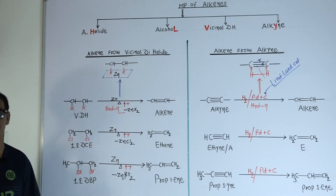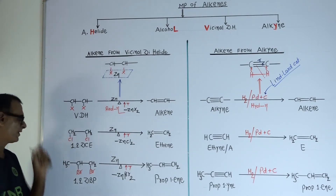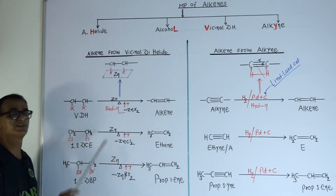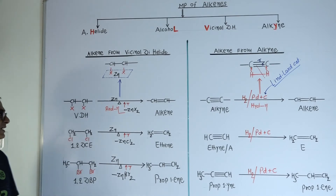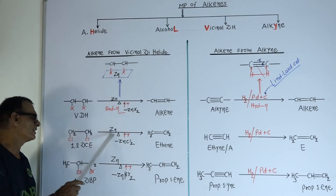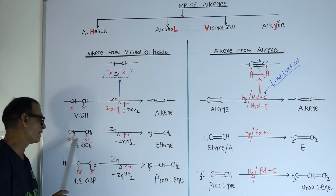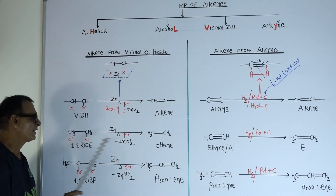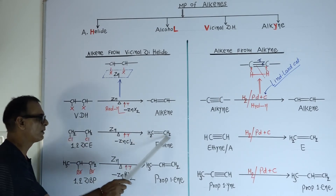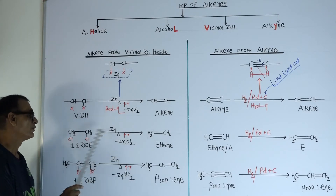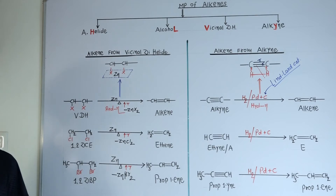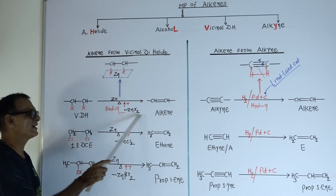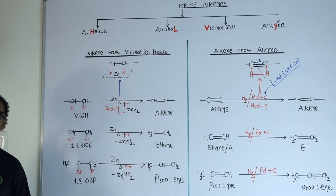When 1,2-dichloroethane is heated with zinc metal at higher temperature, zinc will absorb both halogen atoms and here CH₂ double bond CH₂ is formed. During this reaction, zinc chloride will be removed as a by-product. In the general reaction, ZnX₂ will be removed as a by-product.